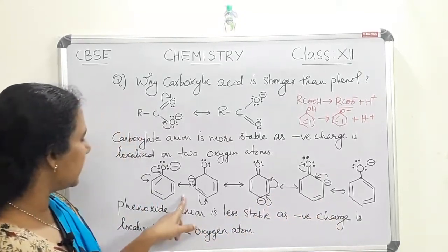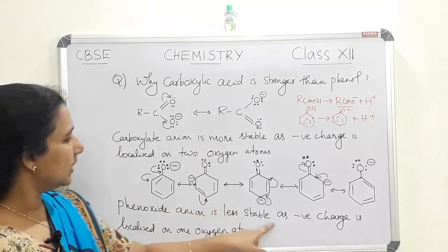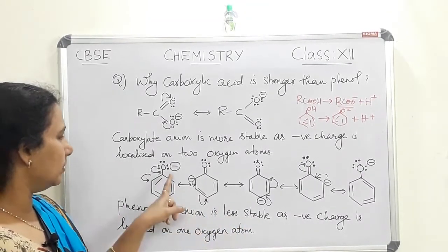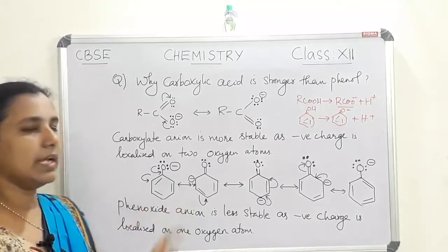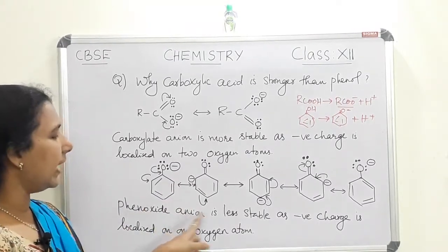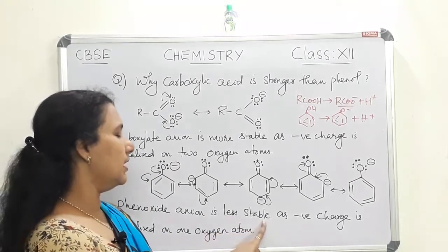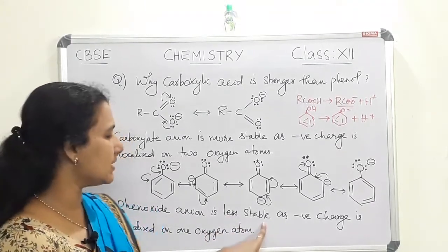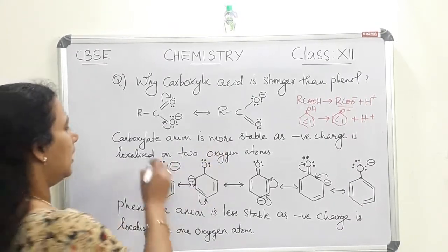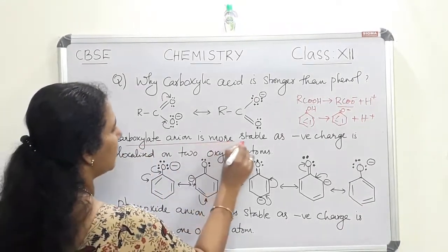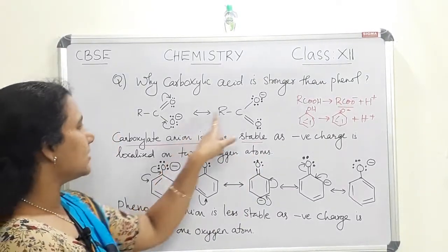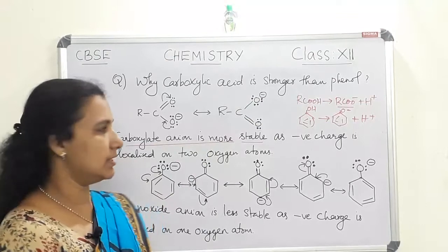The resonance structures of the phenoxide ion are drawn here. In this case, the negative charge is localized on only one oxygen atom. Therefore, the phenoxide anion is less stable, while the carboxylate anion is more stable.